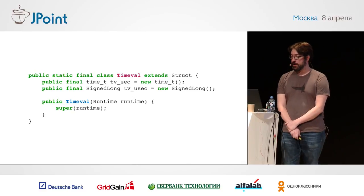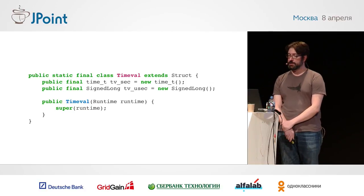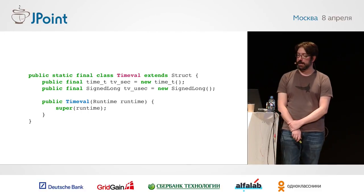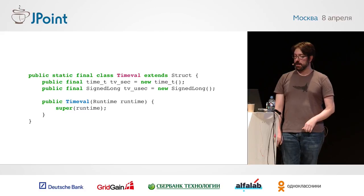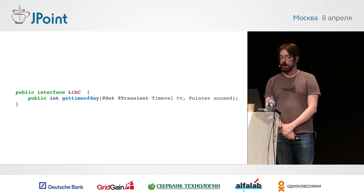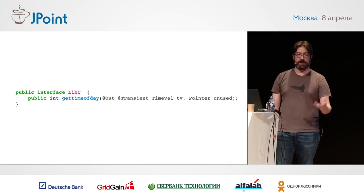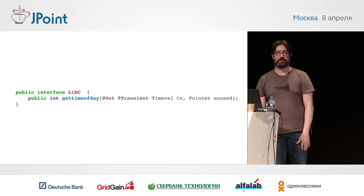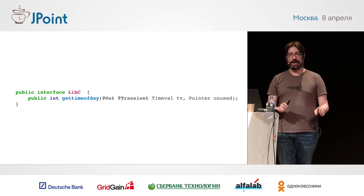Here's a more complicated JNR-FFI example. We have a struct — the timeval struct that represents the C-level timeval. It has two fields, tv_sec and tv_usec for microseconds. These use built-in types provided with JNR-FFI — time_t and signed long — set up so they know the correct size for the platform you're running on. We have a basic constructor passing our runtime through, and a binding for the gettimeofday function. We mark the timeval parameter as an out parameter and transient, so values written by the C code are brought back into Java space.